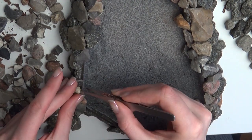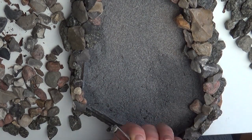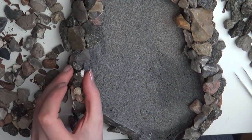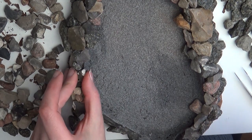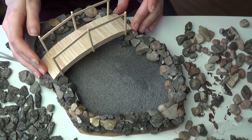Just take your time and use different sizes of rocks so you can cover all the visible plastic. When you're happy with the look of your pond set it aside and then we're gonna work on the fish.